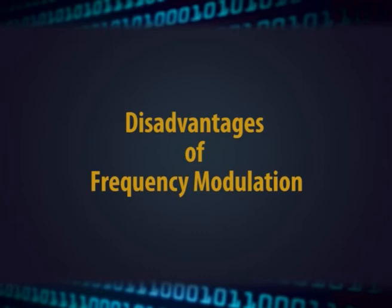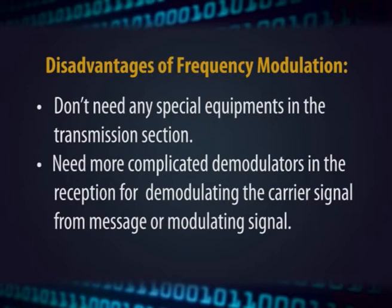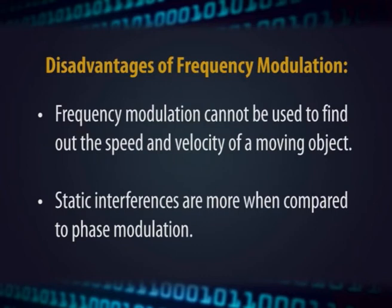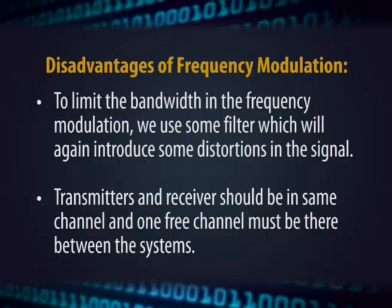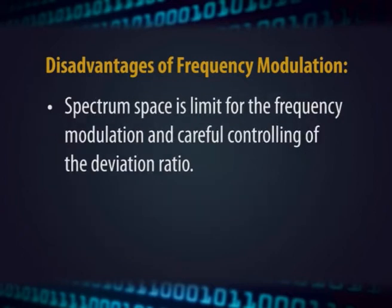Disadvantages of FM: while no special equipment is needed for transmission, the reception side requires a more complicated demodulator to extract the carrier signal from the modulating signal. FM cannot be used to find the speed or velocity of a moving object. Static interference is higher compared to phase modulation. Outside interference from nearby walkie-talkies, radio stations, or other sources is one of the biggest disadvantages. Filters used to limit bandwidth introduce distortion. The transmitter and receiver must be on the same channel, and spectrum space is limited, requiring careful control of the deviation ratio.